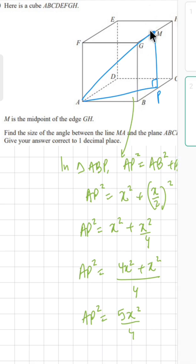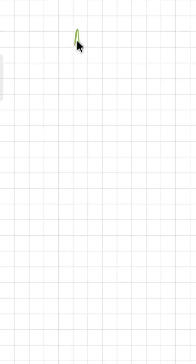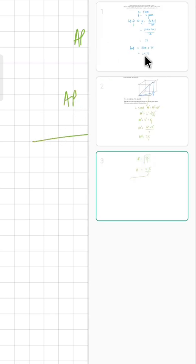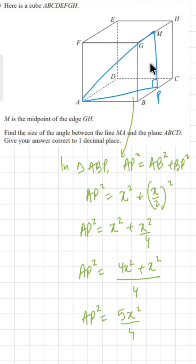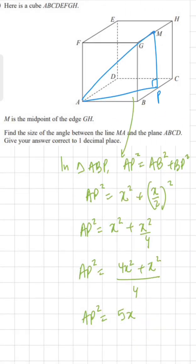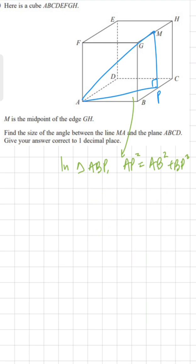Taking 4 as the common denominator: 4x squared plus x squared gives 5x squared, so AP squared equals 5x squared over 4. Therefore AP equals the square root of 5x squared over 4. The x squared comes out of the root as x, and the square root of 4 is 2, so AP equals x√5 over 2.